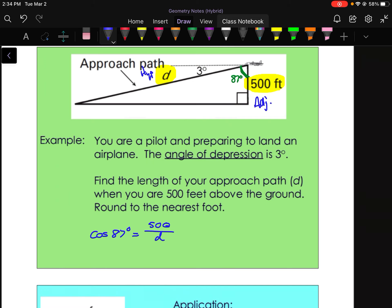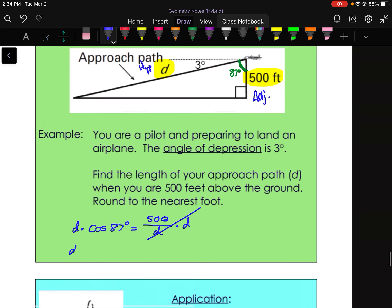So same as the last example, we're not finding an angle. We're finding a side, so we do not need inverse trig function. So we're going to start by multiplying by our denominator D. That will cancel those out. So D times cosine of 87 degrees equals 500. So in the last example, my variable is isolated already. In this example, it is not. We have to do one more step, which would be divide by cosine of 87 on both sides.